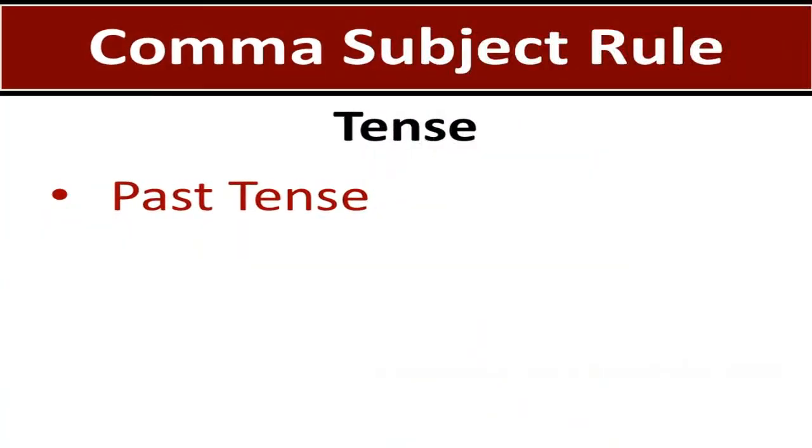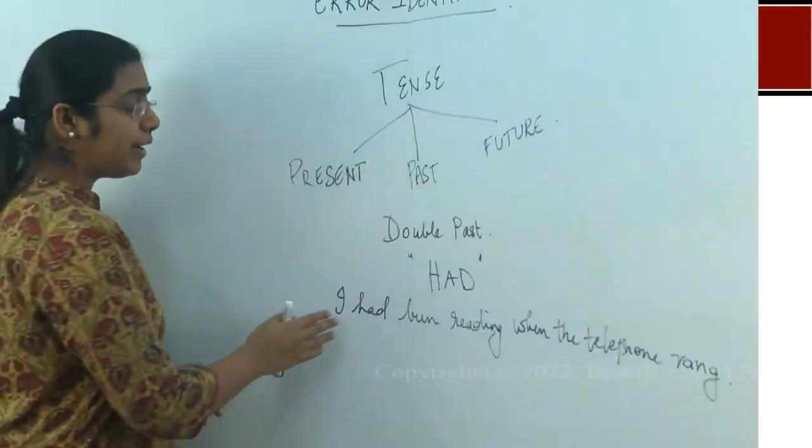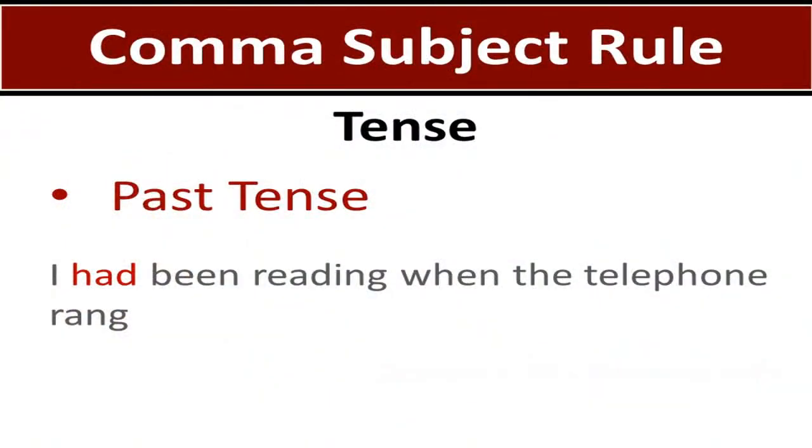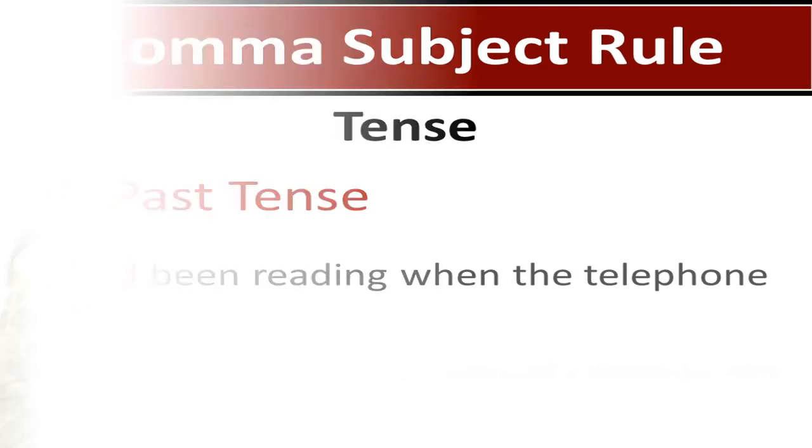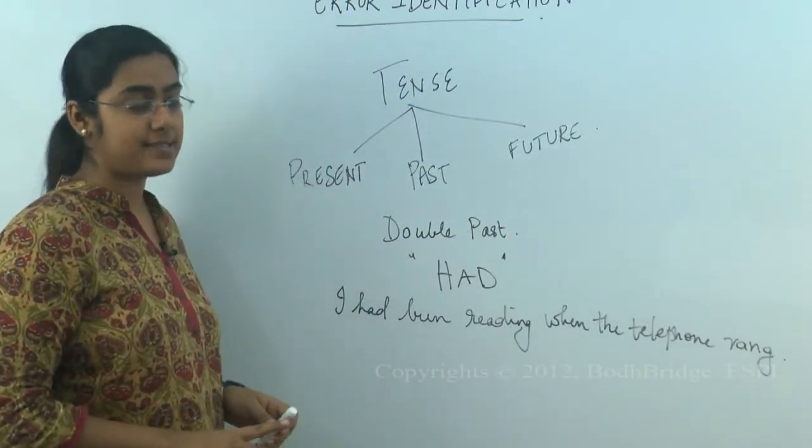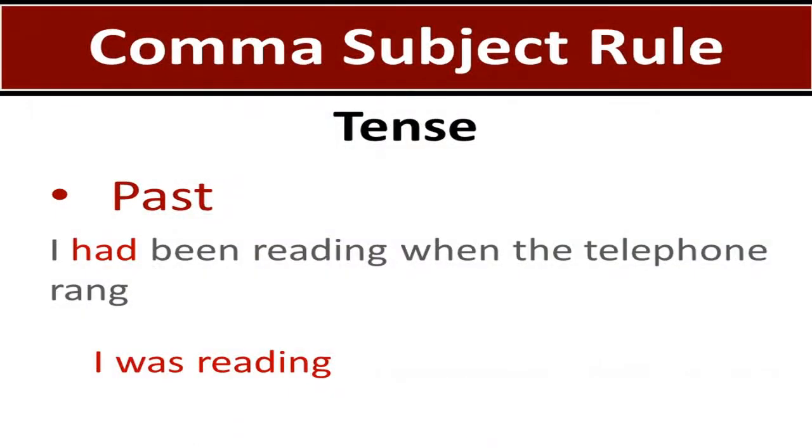Now, let's look into past. Look into this sentence. I had been reading when the telephone rang. We are talking of two events that happened in the past. Number one, I was reading. Number two, the telephone rang.